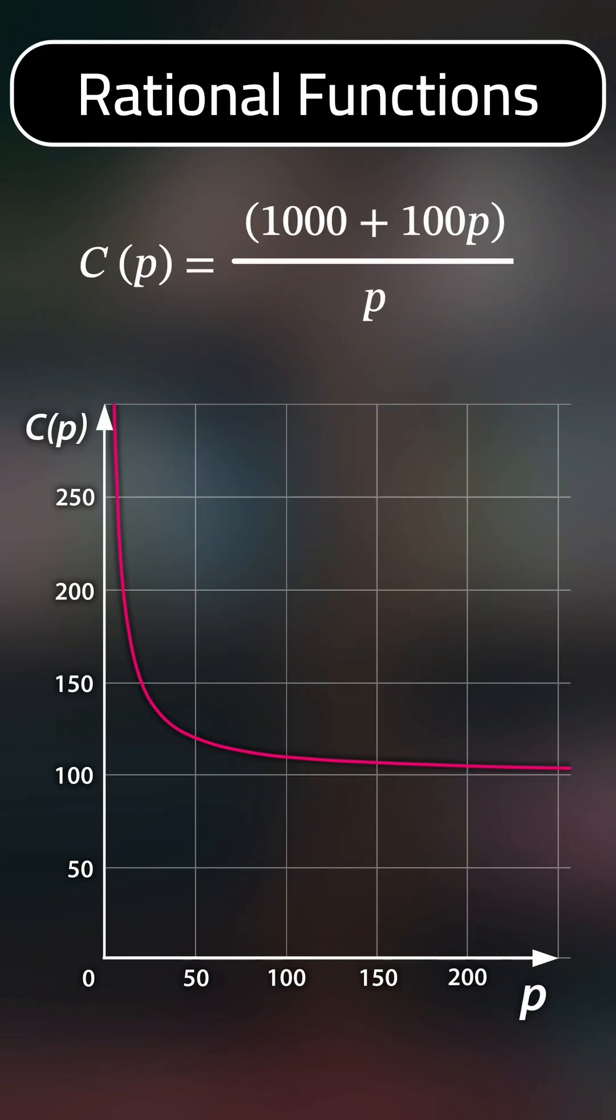The graph shows us that the cost per person rapidly increases with fewer people. We can also see that the formula breaks for zero people, as dividing by zero is undefined.